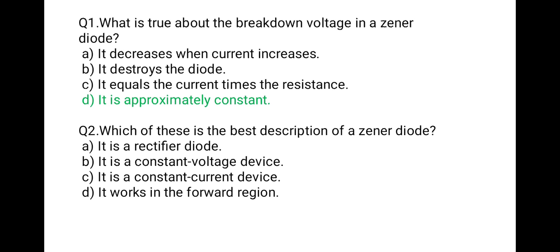The next question: which of these is the best description of a Zener diode? Option A: it is a rectifier diode. Option B: it is a constant voltage device. Option C: it is a constant current device. Option D: it works in the forward region. We know that the Zener diode is widely used in voltage regulators, so its voltage is constant. The correct option is B — it is a constant voltage device.